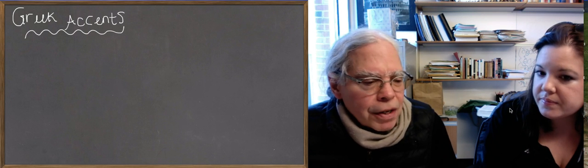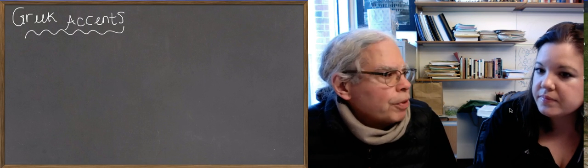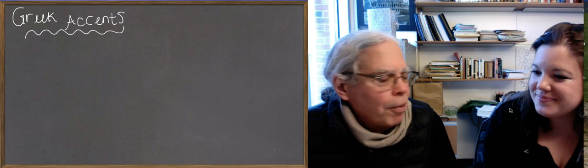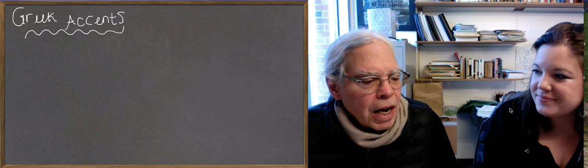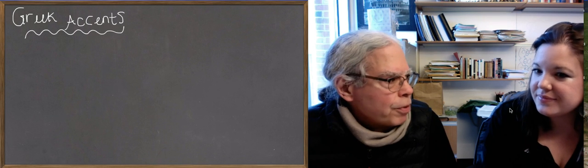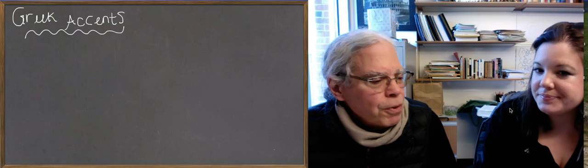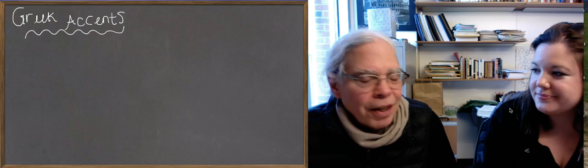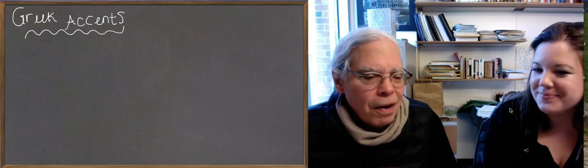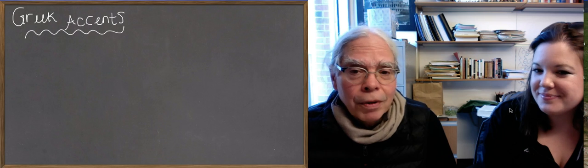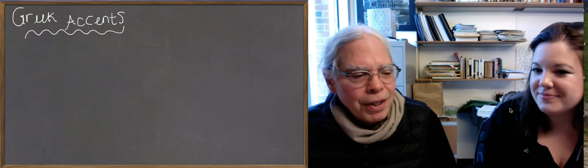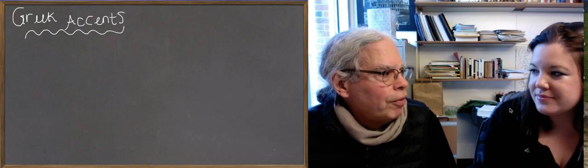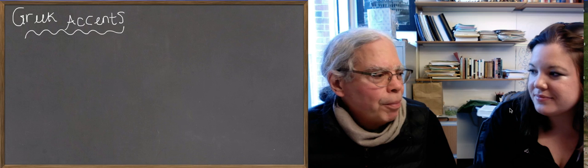If you look at Athenian decrees, which they carved into stone — it's all in capital letters, beautiful capital letters. There's no space between the words, and there are no accent marks. So they knew what they were doing. They knew where the accents were on the words. Why should they write them?